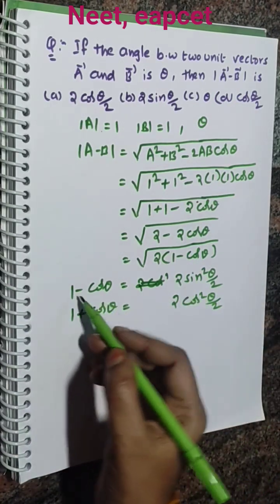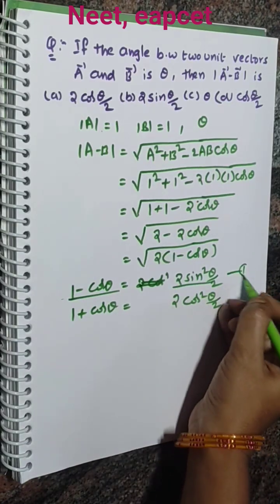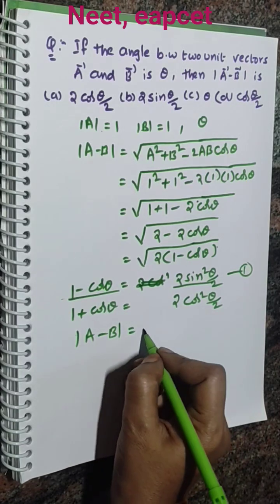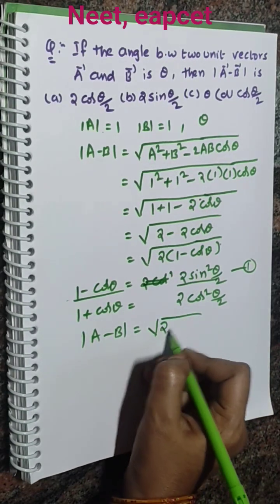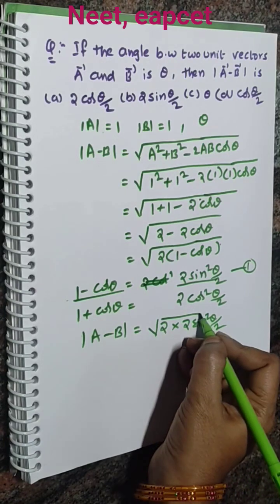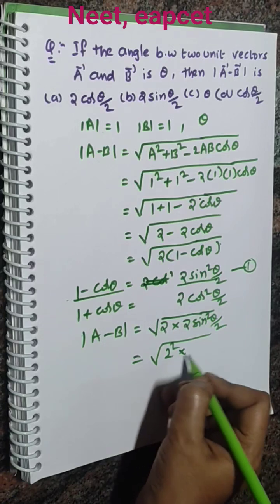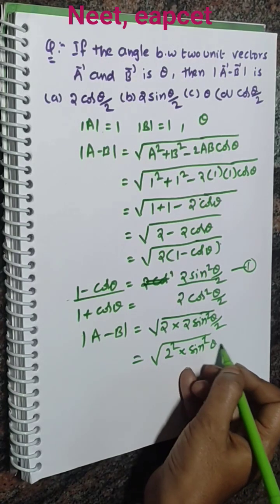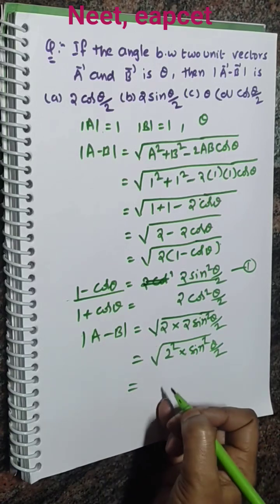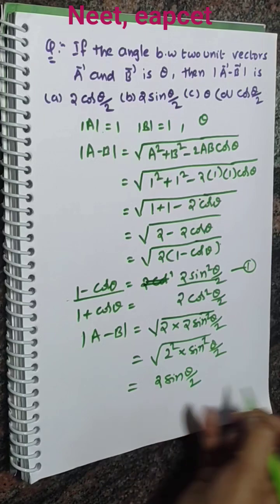So then you get modulus of A minus B equal to square root of 2 into 2 sin squared theta by 2. So see here this can be written as 2 squared into sin squared theta by 2. So here square and root cancel each other. So we have remaining only 2 sin theta by 2.